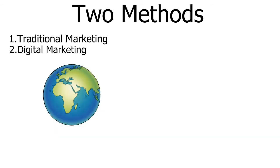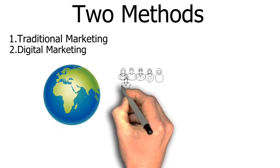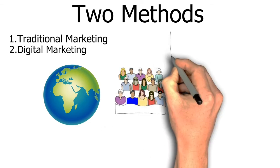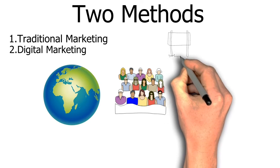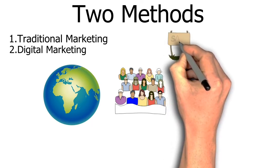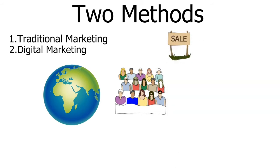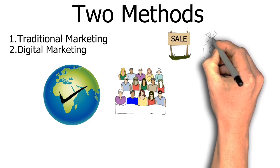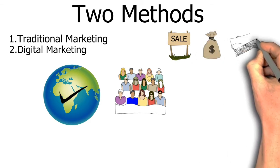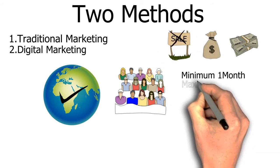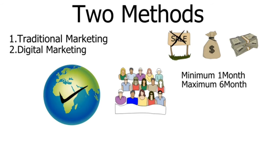In traditional marketing, we find a location to reach our target audience. If we use a banner or a board, we make the board or banner, find the right location, and pay for it. Our total cost could be 1–2 lakh rupees. Now, if we don't get any profit from this advertisement, we still have to keep the board in the same place.